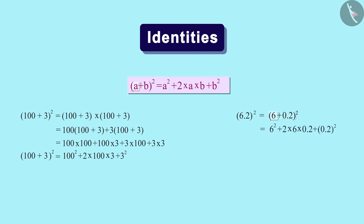Now in this equation, we take A as 6 and B as 0.2. Then, we will get the value of 6.2 square like this. So this equation is very useful for us.